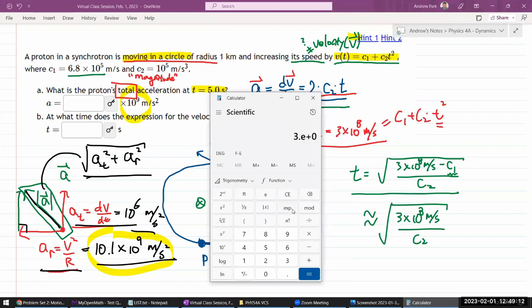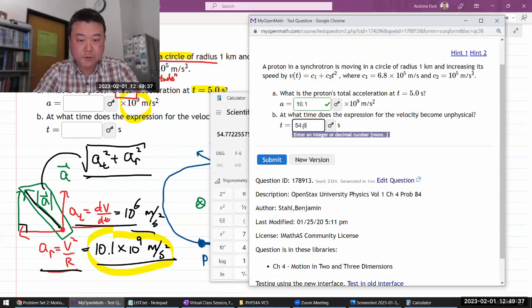So, that's that ratio here. Let me take the square root. So, after 54.8 seconds, it would supposedly be faster than the speed of light, which is unphysical. So, 54.8.